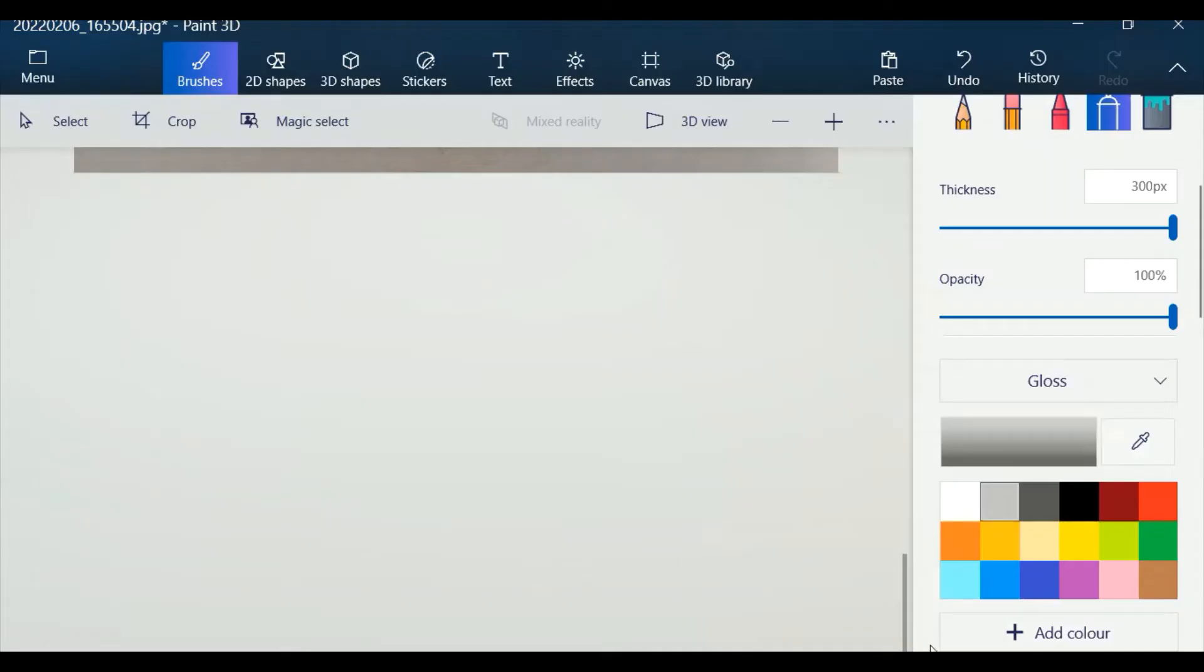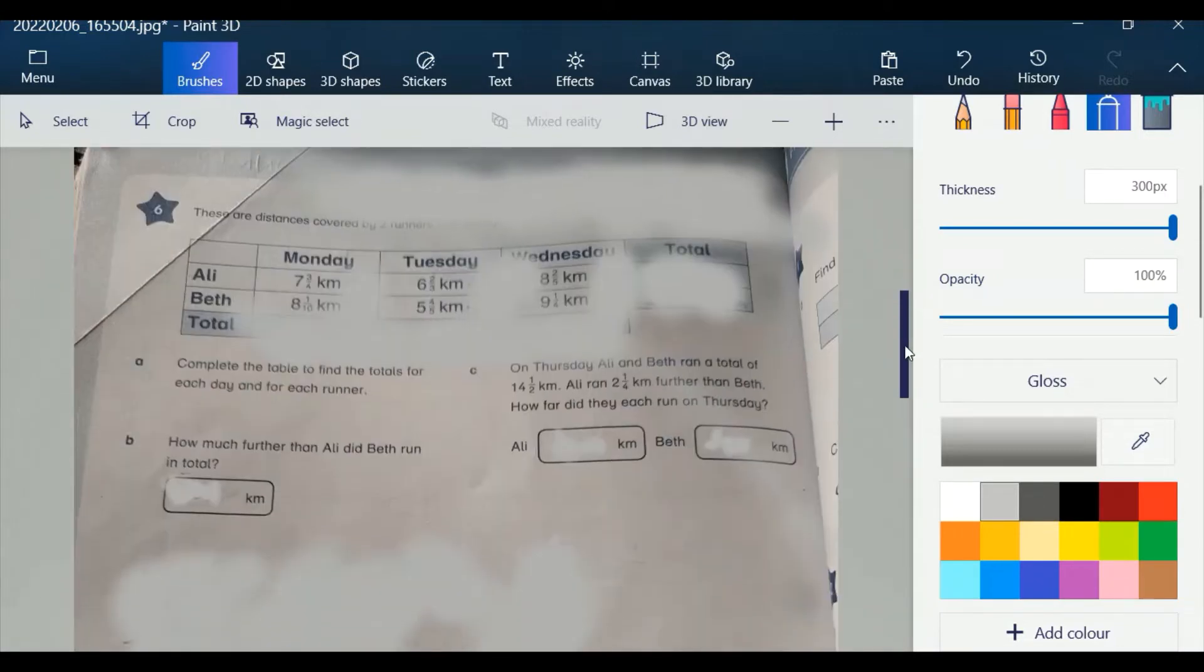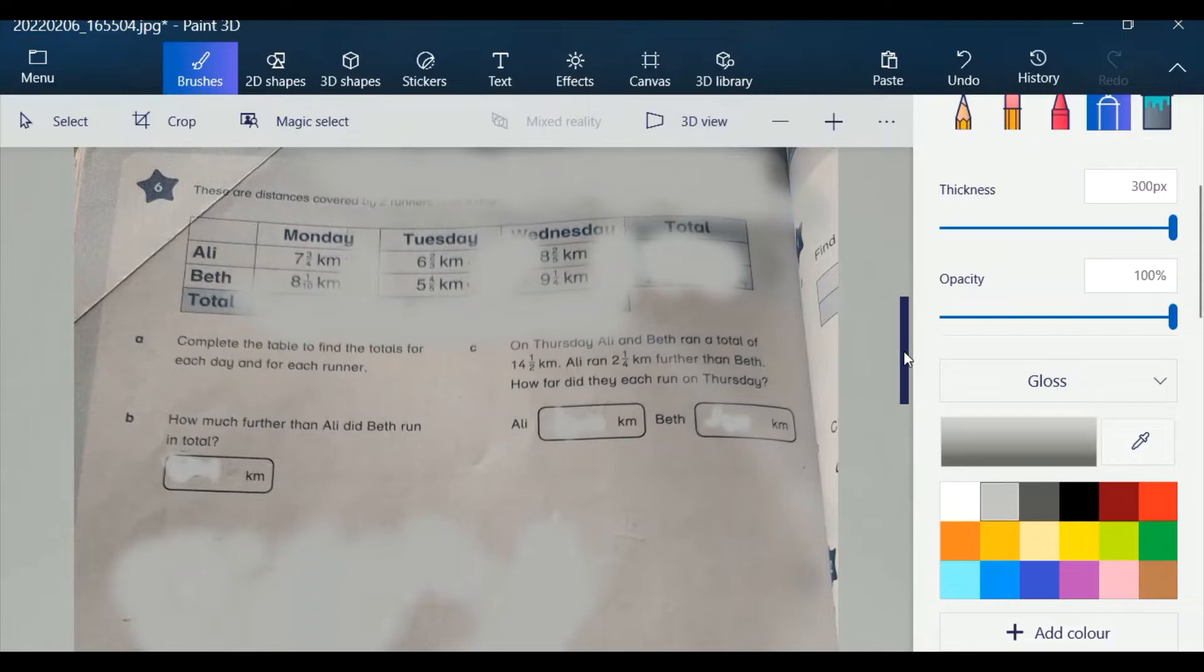Hello and very good morning students. Today we will do Rising Star of Maths by Alex's workbook page number 132, question number 6. There are distances covered by 2 runners over 3 days.